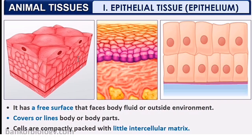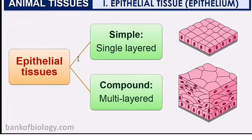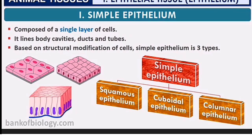Epithelial tissue has a free surface and a flat surface. It covers and lines the body and body parts. The cells are very compactly and tightly packed. Epithelial tissues are of two types: single layer epithelial tissue and compound layer epithelial tissue.